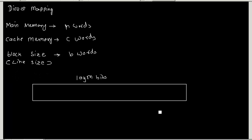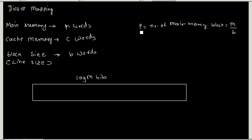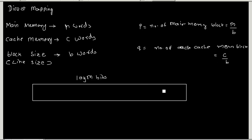For direct mapping I require two more quantities. P, the number of main memory blocks, is given by M divided by B, where M is the size of main memory and B is the size of blocks. Similarly, Q, the number of cache memory blocks, is given by C divided by B, where C is the size of cache memory.